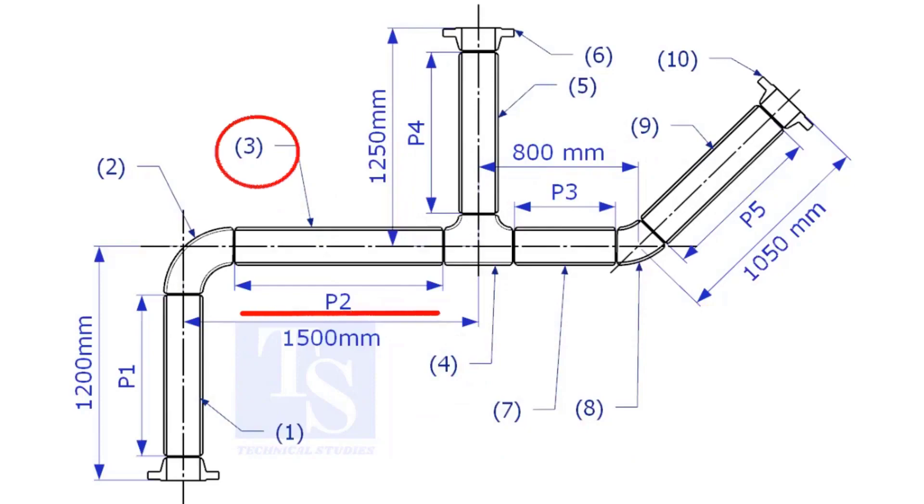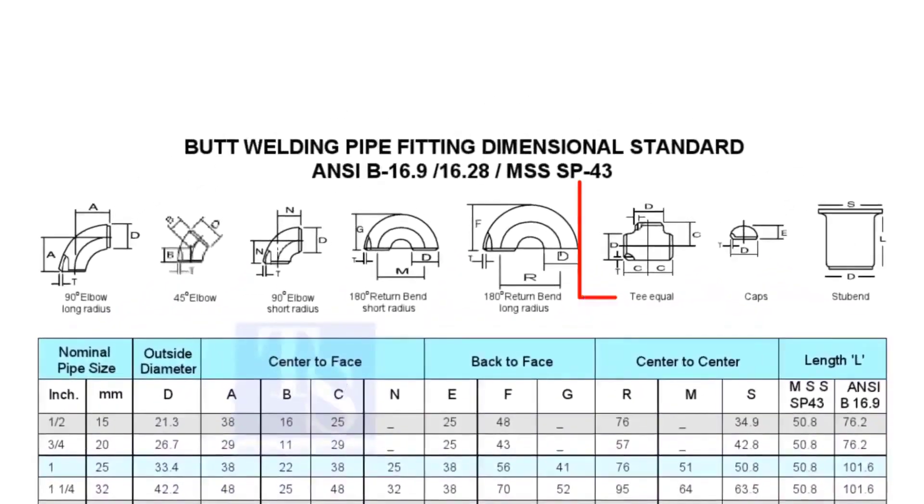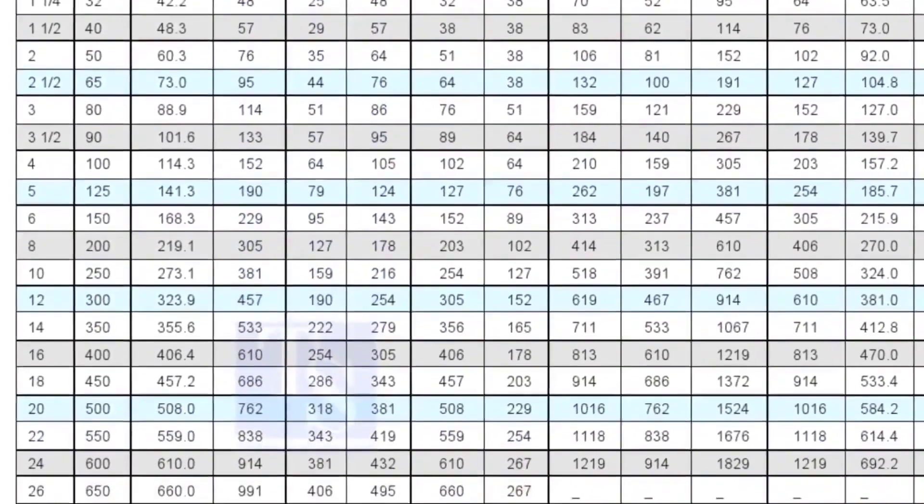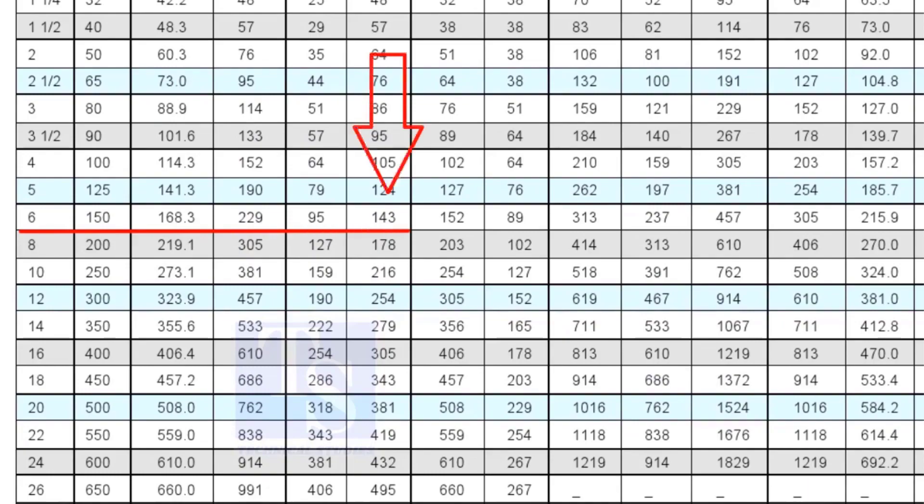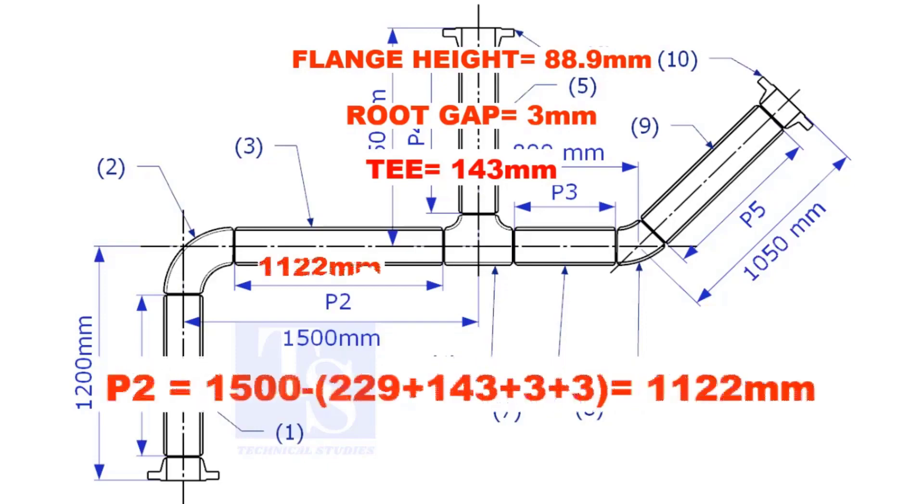Let us calculate the length of item number 3. We already know the takeoff length of the 6 inch long radius elbow. Now, check the chart for the takeoff length of the equal tee. It is 143mm. The length of item number 3 is 1122mm.